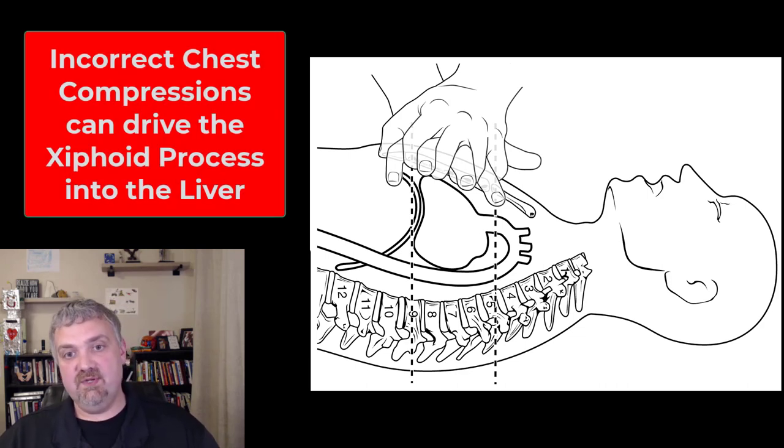You can actually pierce the liver if the xiphoid process were to break or be dislocated while performing CPR. So the xiphoid process - that's the main reason to know where it is - is to stay away from it if you're doing chest compressions on somebody.